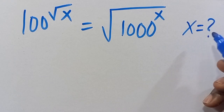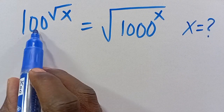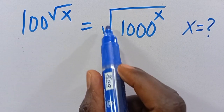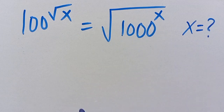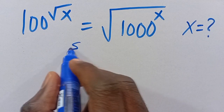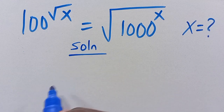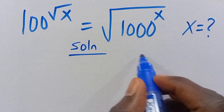What is the value of X given that 100 to the power of root X equals the square root of 1000 to the power of X? Let's work through the solution.